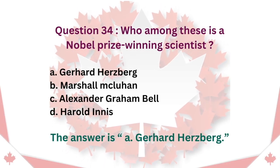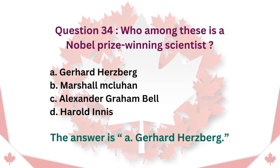Question 34: Who among these is a Nobel Prize-winning scientist? A. Gerhard Herzberg. B. Marshall McLuhan. C. Alexander Graham Bell. D. Harold Innes. The answer is A. Gerhard Herzberg.